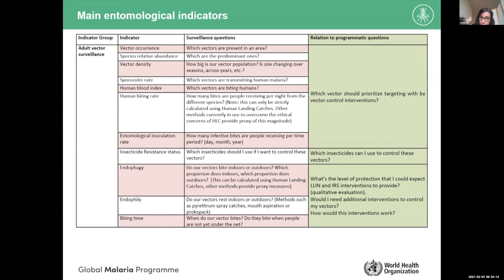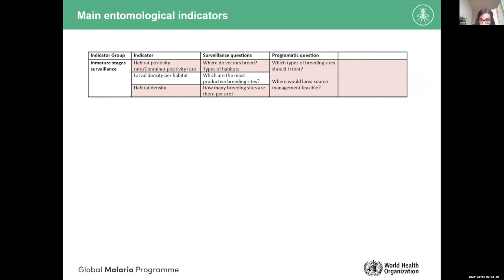In summary, three programmatic questions and their corresponding indicators: which vectors should I target; which insecticides can I use; and which interventions are appropriate, based on endophagy, endophilia, and biting time. There are other indicators as well, but these convey the main usefulness of entomological indicators. Before moving on to immature stage indicators — larvae and pupae — the presenter checks for questions from the chat.